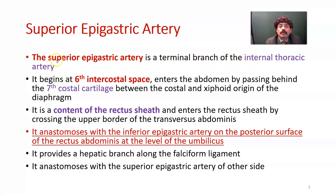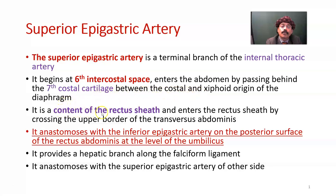The superior epigastric artery begins at the sixth intercostal space. It enters the abdomen by passing behind the seventh costal cartilage, between the costal and xiphoid origin of the diaphragm. It is a content of the rectus sheath and it enters the rectus sheath by crossing the upper border of the transversus abdominis muscle.